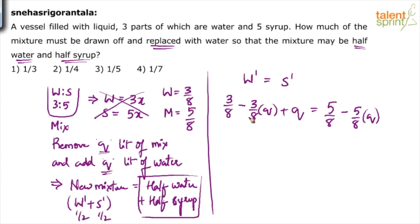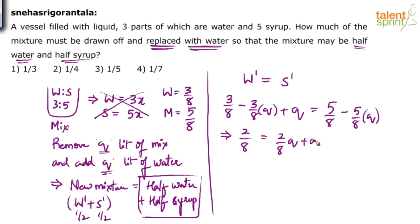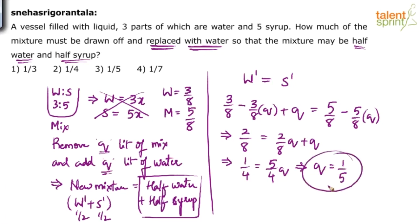Both are equal. Initial water was 3/8, from which we removed 3/8 of q, plus we added q. This plus q is important — it does not appear on the syrup side because only water was added. Simplifying: (5/8) - (5/8)q = (3/8) - (3/8)q + q. This gives 2/8 = (1/8)q + q, so 1/4 = (5/4)q, therefore q = 1/5.